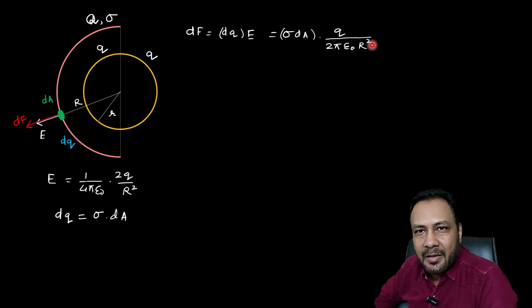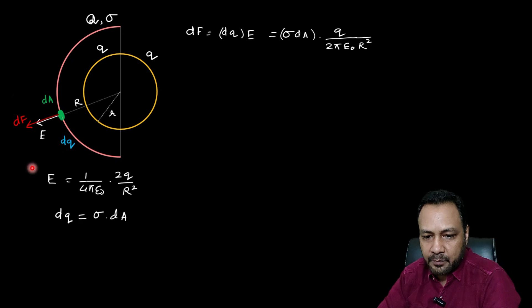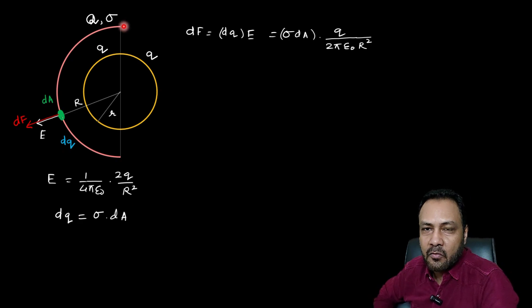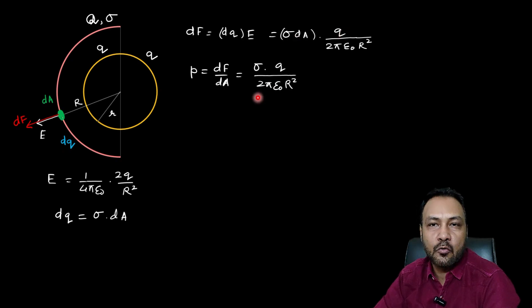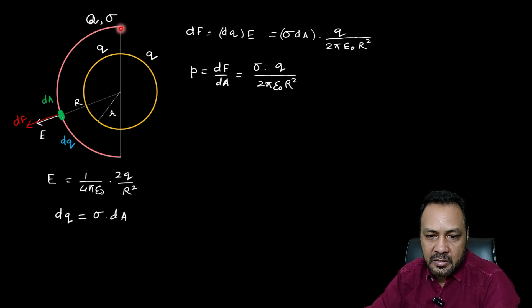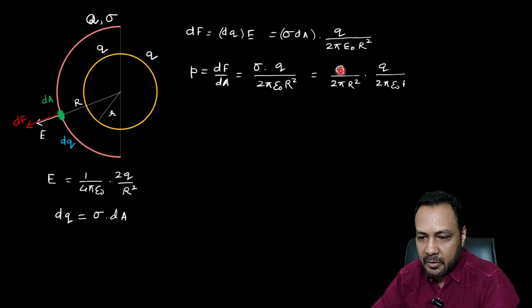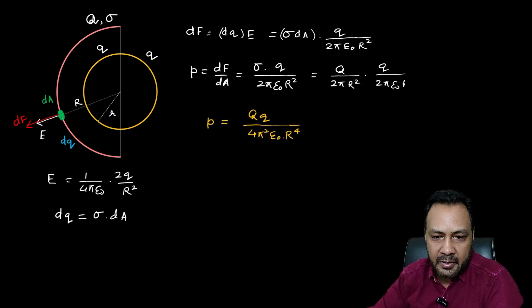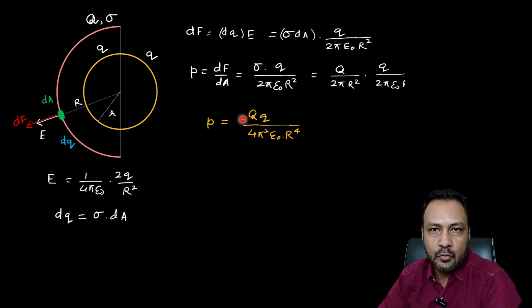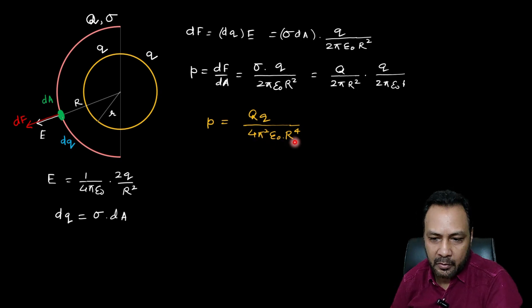The electrostatic pressure P at that point is dF/dA = sigma·Q / (2π ε₀ R²). Since the surface charge density sigma = Q / (2π R²) for the hemispherical shell, substituting gives the electrostatic pressure P = Q·q / (4π² ε₀ R⁴).